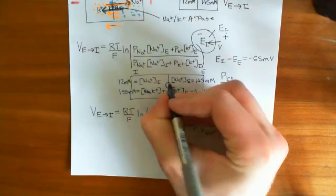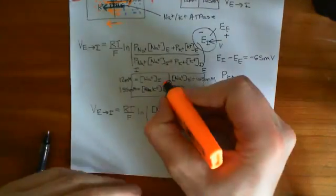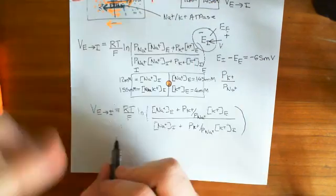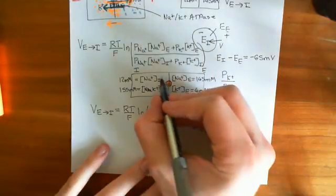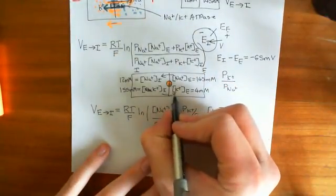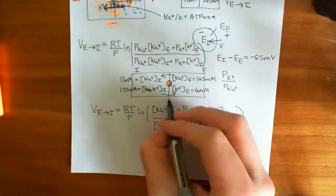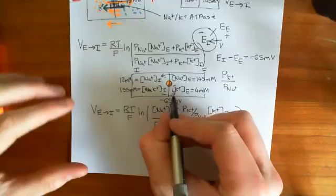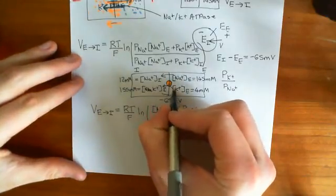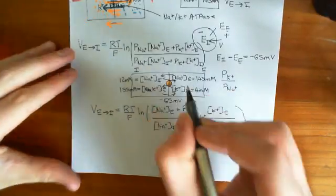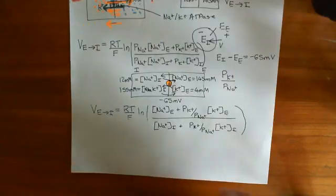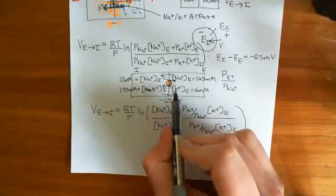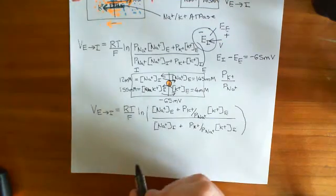It would be ideal if the sodium-potassium pump pumped two sodiums out and two potassiums in, perfectly reversing the resting movements of sodium and potassium. But the sodium-potassium pump actually moves three sodiums out and two potassiums in — it moves unequal amounts of charge — which makes things slightly more complicated.